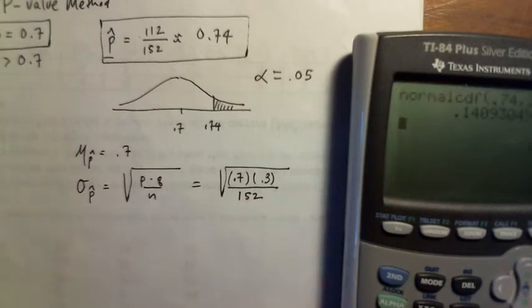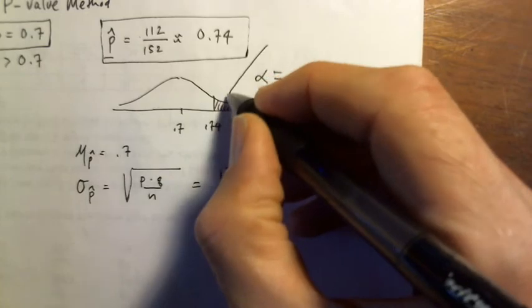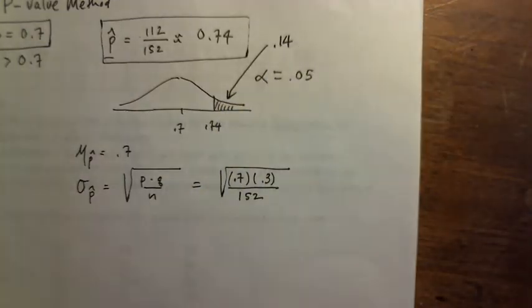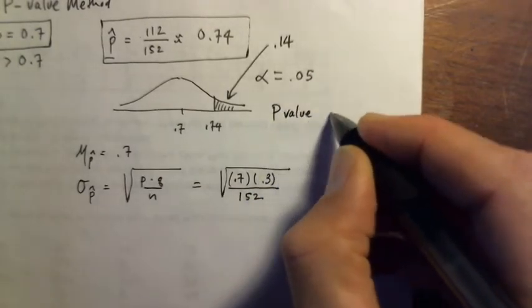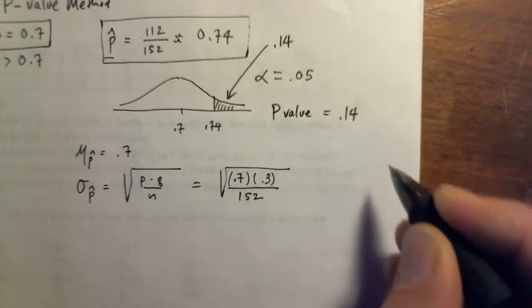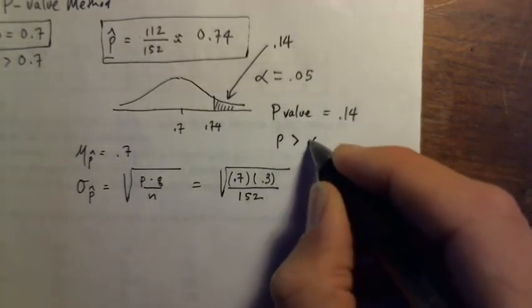And I get 0.14. So what that has told me is that this area out here is 0.14. That area there is the p-value. I got a p-value equal to 0.14.